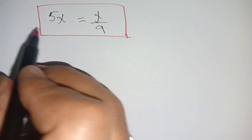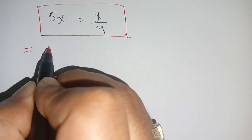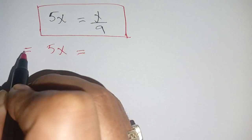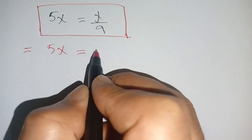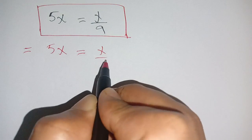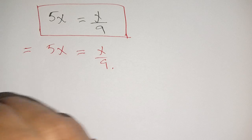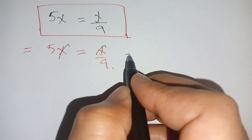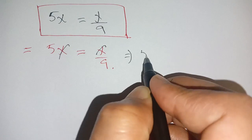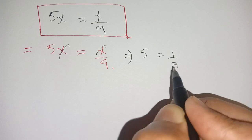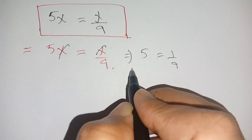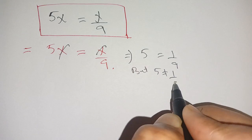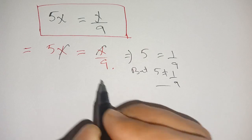First, let us look at the mistake that most students make. They write 5x is equal to x divided by 9, and they cancel out the x on both sides and get 5 is equal to 1 divided by 9. But 5 is not equal to 1 divided by 9, which is totally wrong.